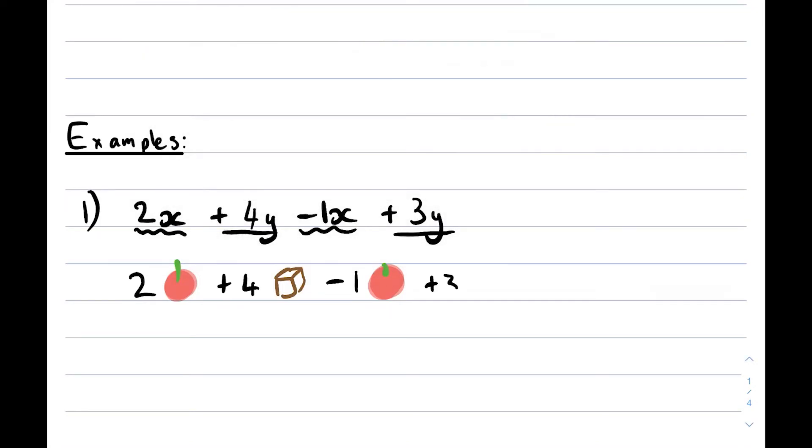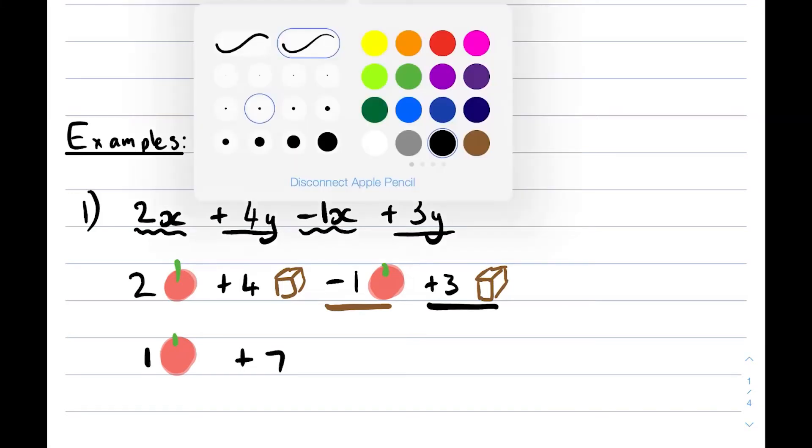Then you have positive 3 of y. And y we just said is maybe something like a box. So literally if you think about this you have two apples and then you are subtracting one apple. So if you have two apples and you're subtracting one apple you have one apple left. And then when you look at the boxes, you have four boxes and then you add three boxes. So the sign in front of it is telling you what to do. If you have four boxes and you're adding three boxes you obviously have seven boxes.